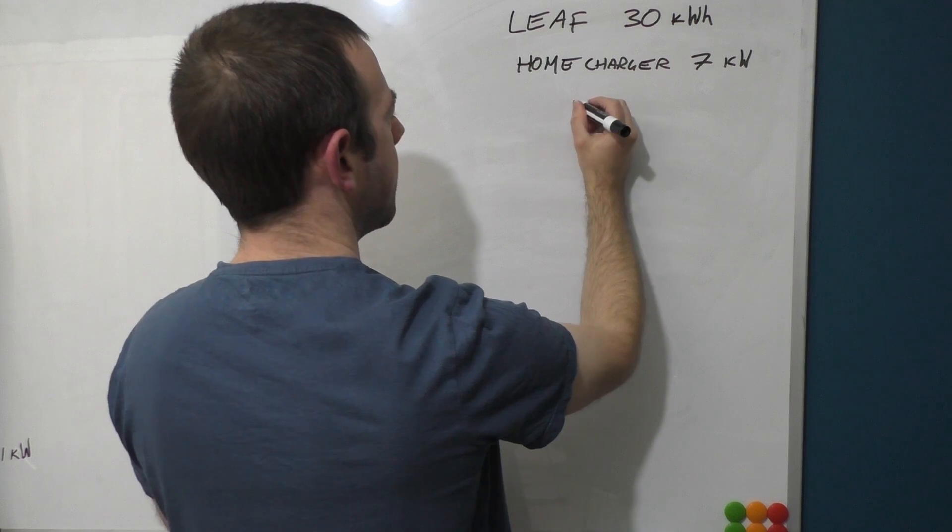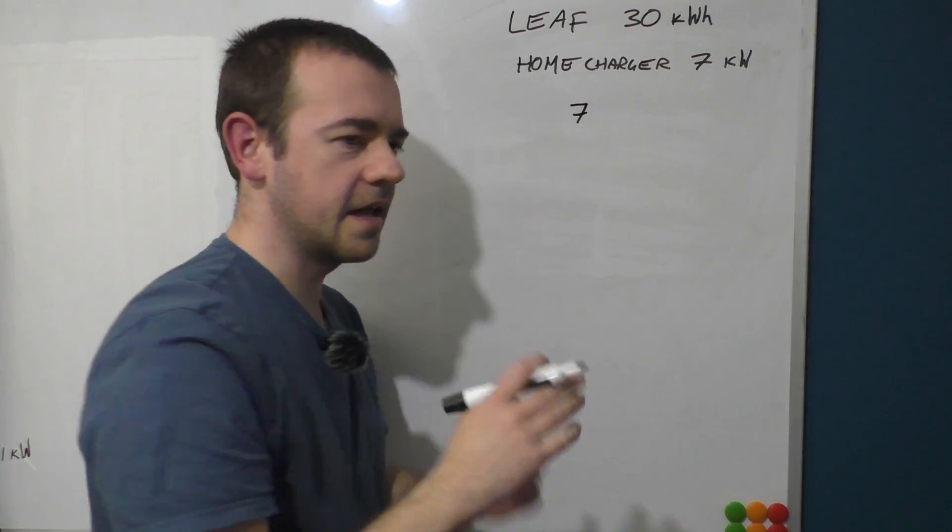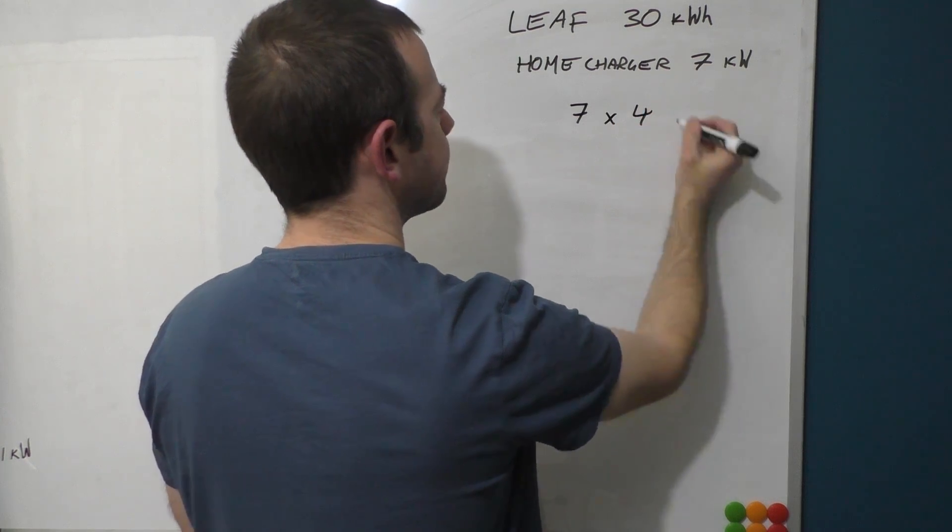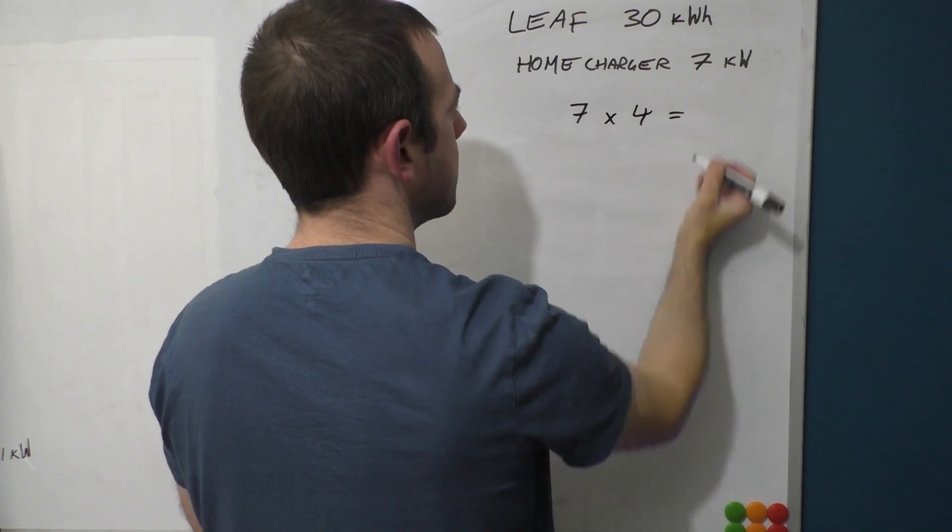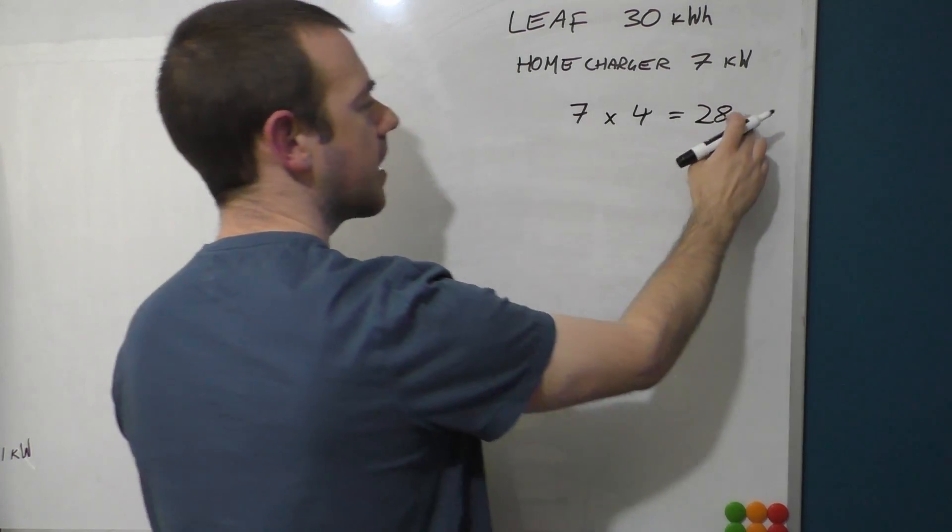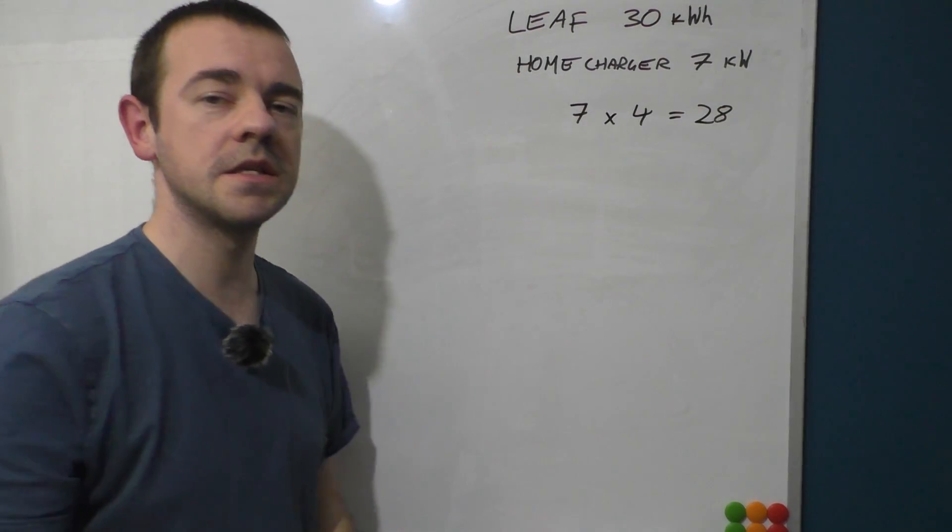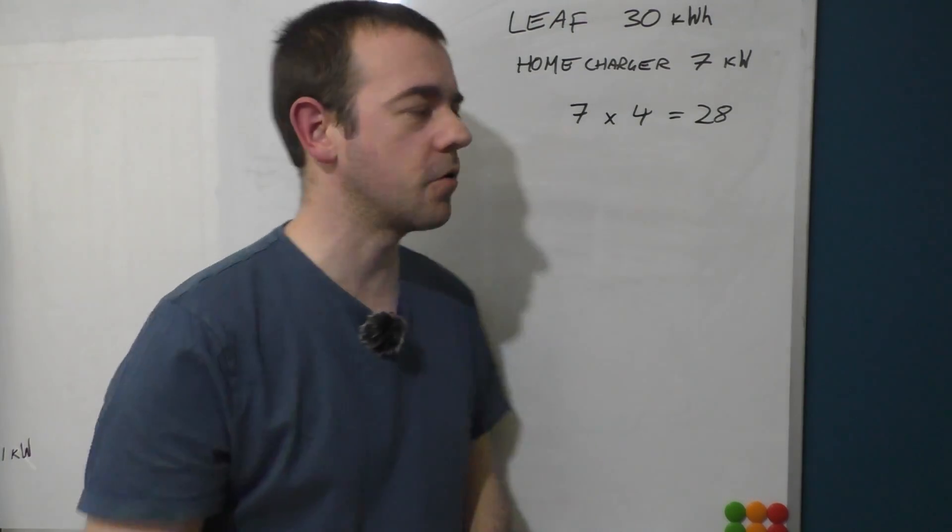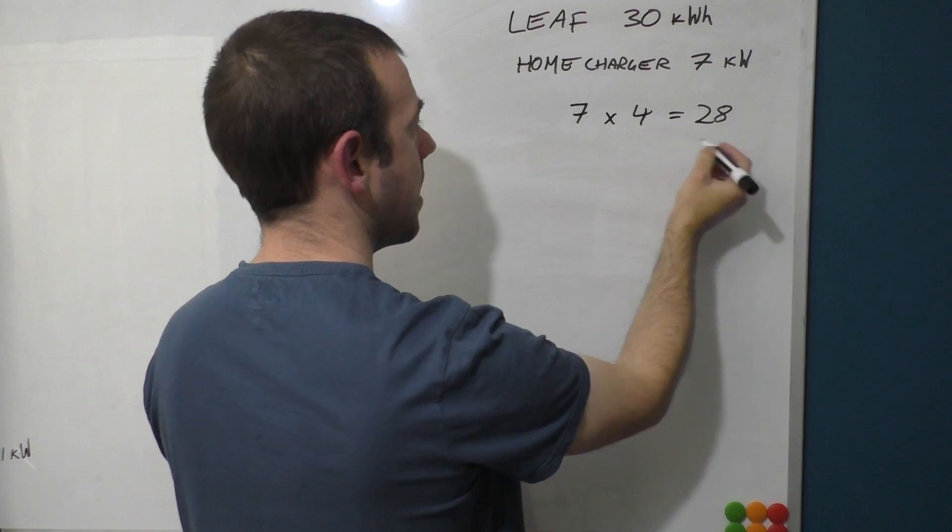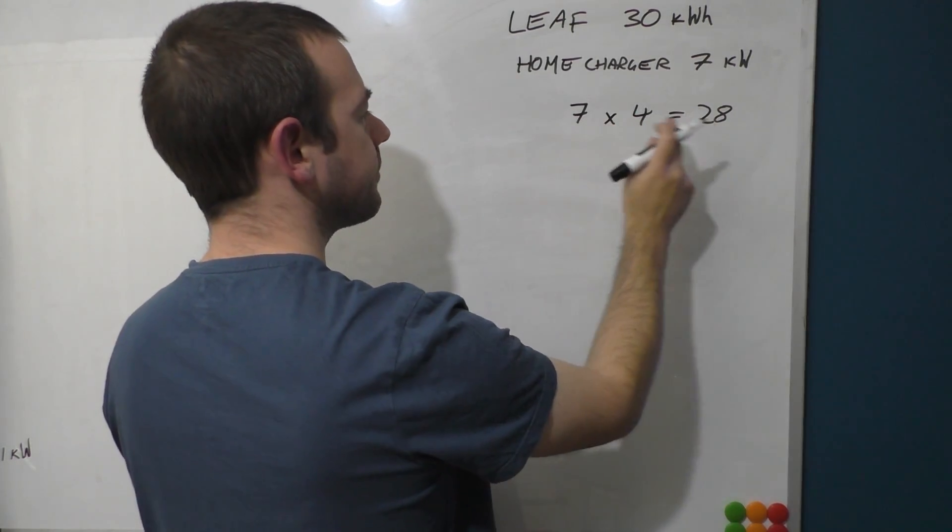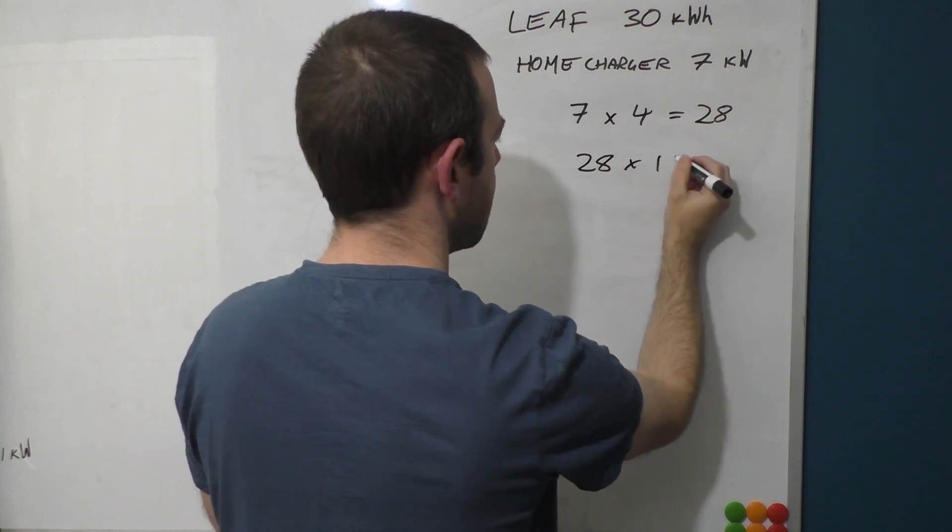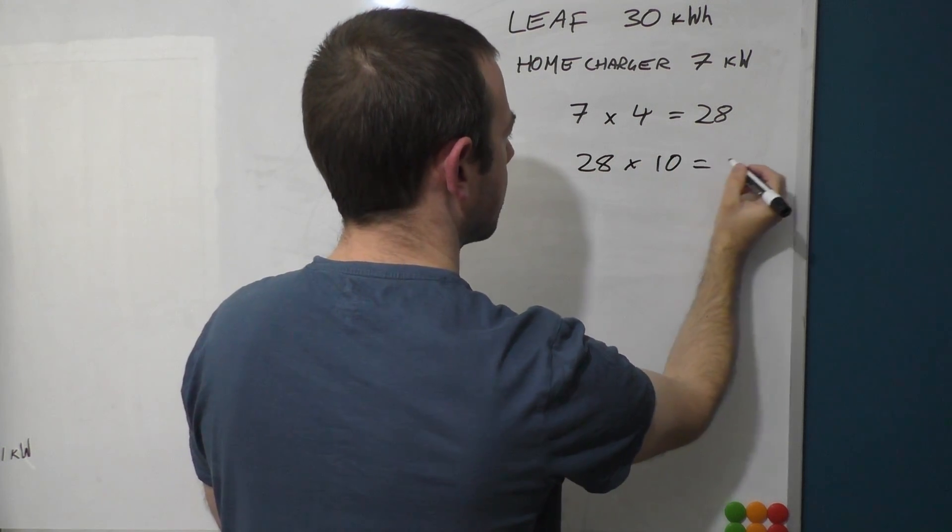If I plugged that charger into that car, then again theoretically if there were no losses, that would be seven times let's say four hours. So seven times four is quite straightforward, that's 28. So that would mean that in four hours I would get 28 kilowatt-hours of energy into that car, almost fill it up. And that would cost me, because I pay let's say 10 pence per kilowatt-hour again, 28 times 10 pence, which of course is 2 pounds 80.